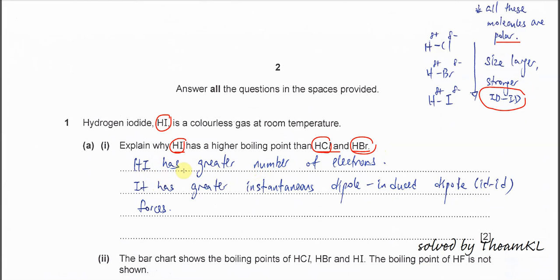This question is about IDID. You need to explain in terms of size or number of electrons. HI has a greater number of electrons, therefore it has greater instantaneous dipole-induced dipole forces. This is the correct answer—it relates to the number of electrons which will give larger IDID forces.